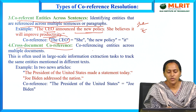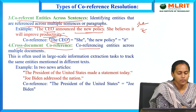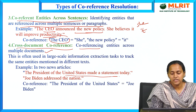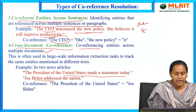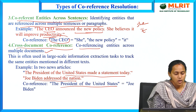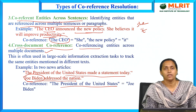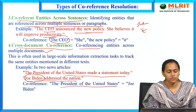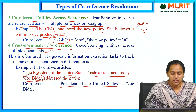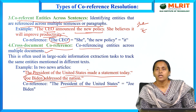In cross-document coreference, entities are co-referenced across multiple documents. For example: 'The president of the United States made a statement today. Joe Biden addressed the nation.' Here, 'the president of the United States' is equivalent to 'Joe Biden.' This is cross-document coreference.